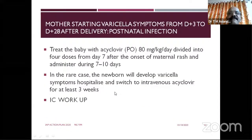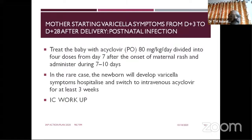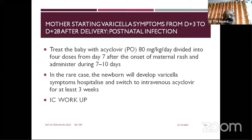If the mother's symptoms started from day 20 before delivery, definite antibody transfer to the baby may occur, making it less serious. In such cases, if immunoglobulin is not needed, treat the baby with oral acyclovir: 80 mg/kg/day divided as 20 mg/kg four times a day for seven to ten days. If the child develops serious consequences, think about IV acyclovir and rule out any immunocompromised condition.